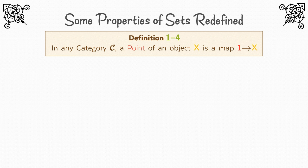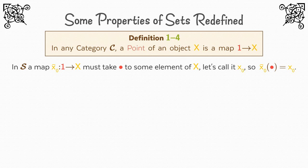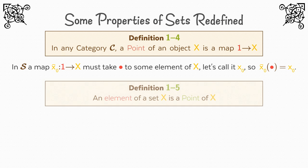What are the points of sets? Well, 1 in S is the one element set, so a map x₀ bar from 1 to X must take this unique element to some element of X. Let's call it x₀. So x₀ bar of dot is equal to x₀. So in S, the points are the elements of the set. In other words, maps 1 to X tell us everything we need to know about a set.